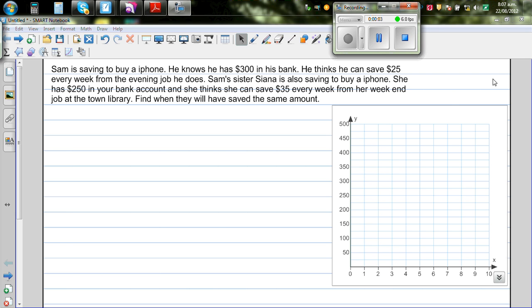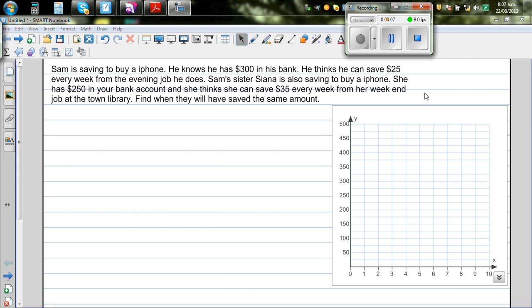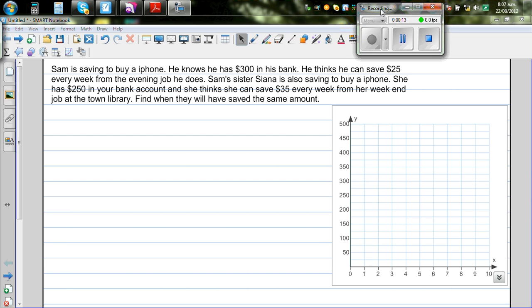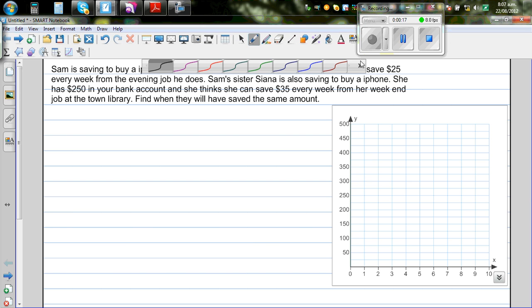In this video I want to explain how a simple real-life problem can be solved in different ways. This is a real-life problem. Let's read the problem first. Sam is saving to buy an iPhone. He knows he has $300 in his bank. He thinks he can save $25 every week from the evening job he does.